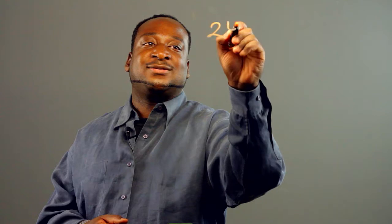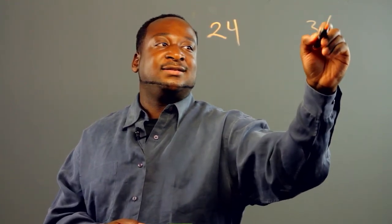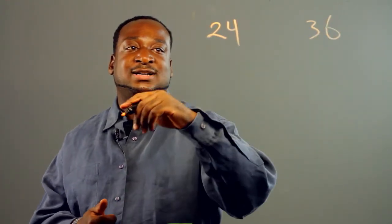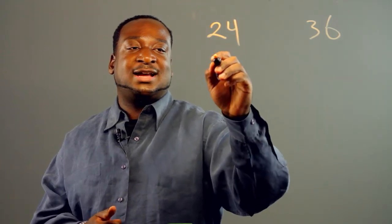In finding the greatest common factor, let's say for two numbers, you have 24 and 36. You always want to factor it out.